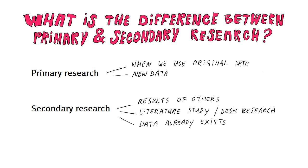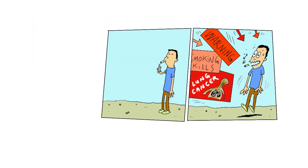So when do scholars perform primary or secondary research? Well, often we do both in different stages of a larger study. Let's say I'm interested in the effects of fear appeals in anti-smoking campaigns. More specifically, I want to know if a Dutch anti-smoking campaign should make more use of them in order to become more effective.